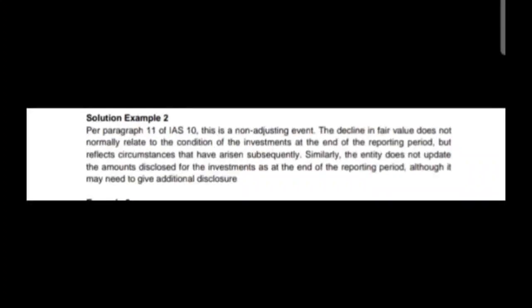Solution for example two: The decline in fair value does not normally relate to the condition of the investment at the end of the financial period, but reflects circumstances that arose subsequently. The entity does not update the amount disclosed for the investment as at the end of the reporting period, although it may need to give an additional disclosure. This event does not relate to any condition which arose before the financial period ended, so this is a non-adjusting event.